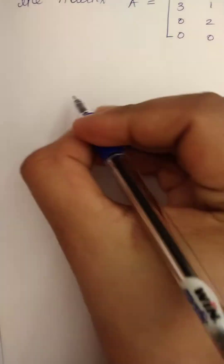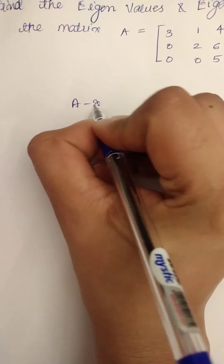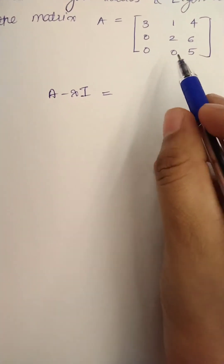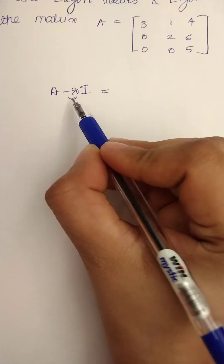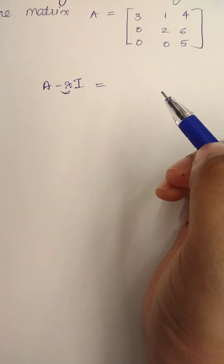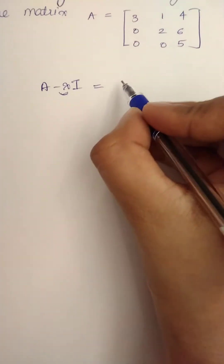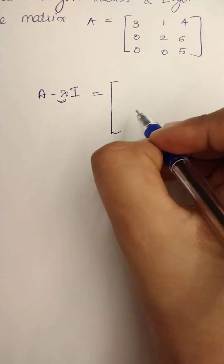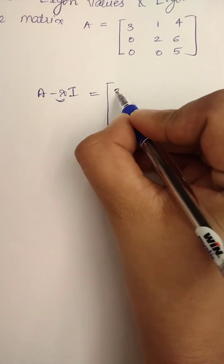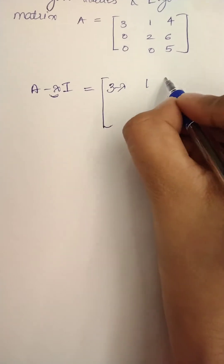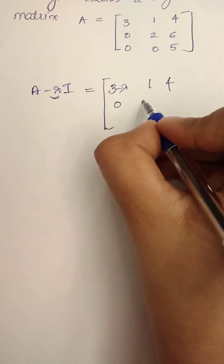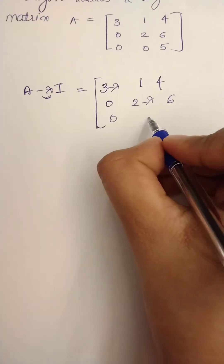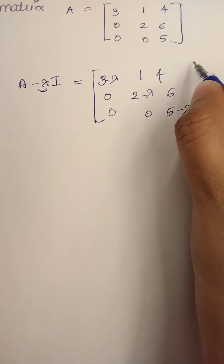The first step is A minus lambda I, where I is the identity matrix. So A minus lambda I gives us the matrix: 3 minus lambda, 1, 4 in the first row; 0, 2 minus lambda, 6 in the second row; 0, 0, 5 minus lambda in the third row.